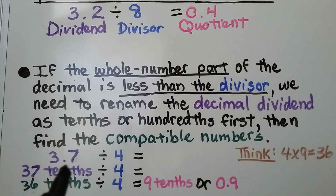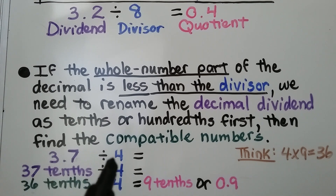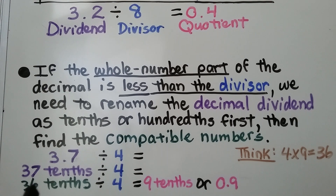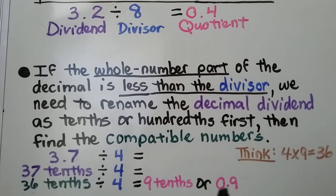We have 3 and 7 tenths divided by 4. This whole number 3 is less than the divisor 4, so we need to rename it as 37 tenths. We think 37 tenths divided by 4 — a compatible number would be 36. 36 divided by 4 equals 9, so 36 tenths divided by 4 equals 9 tenths. We just think 4 times 9 equals 36, or 36 divided by 4 equals 9.